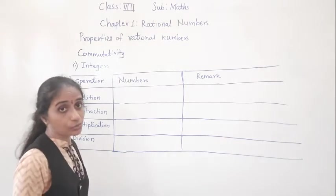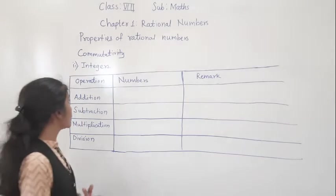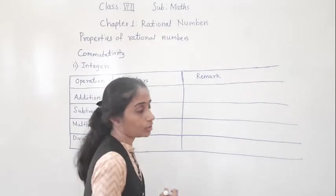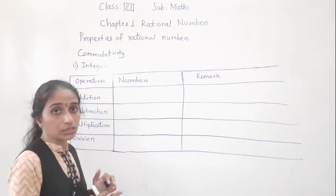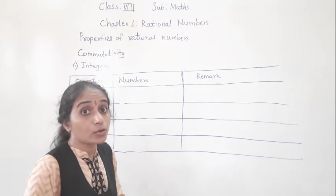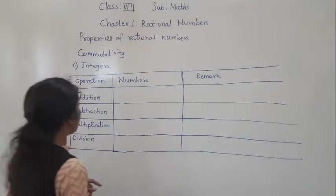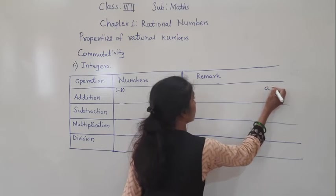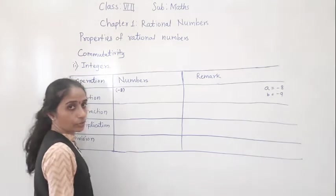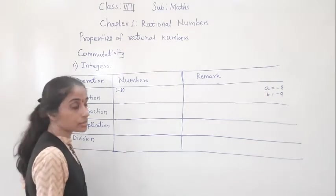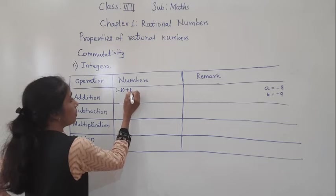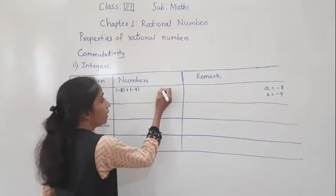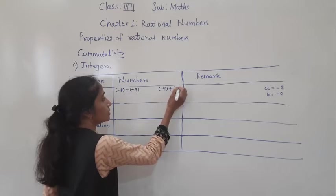Now commutative property for integers. We have learned it for whole numbers; now we will see for integers. For the addition operation, we check if A plus B equals B plus A. Let A equal minus 8 and B equal minus 9. So A plus B is minus 8 plus minus 9, and B plus A is minus 9 plus minus 8. Let's open the brackets and solve both sides.